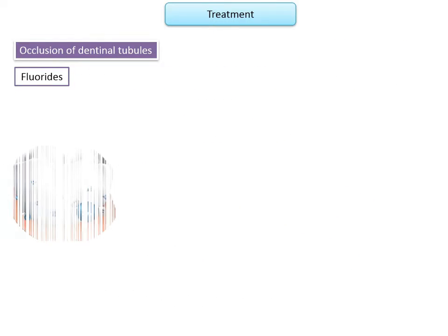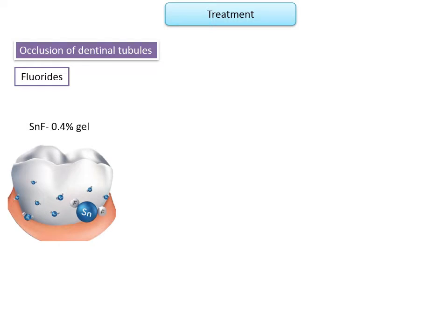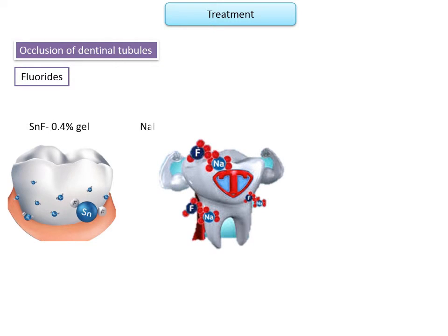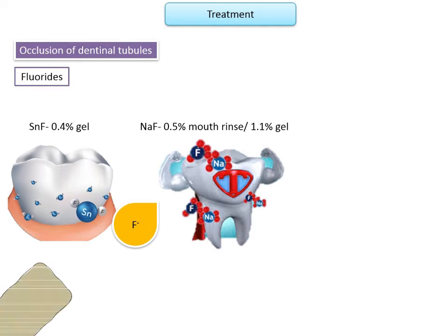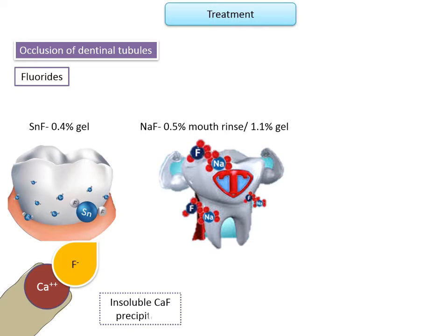Fluorides: patients can apply stannous fluoride in a 0.4% gel or sodium fluoride in a 0.5% mouth rinse or 1.1% gel. Fluorides reduce dentine permeability by precipitation of insoluble calcium fluoride inside the dentinal tubules. The fluoride ion reacts with ionized calcium in the tubular fluid, forming an insoluble calcium fluoride precipitate that blocks the tubules. Stannous fluoride is believed to be more effective than sodium fluoride in concentrations used for toothpaste formulations.